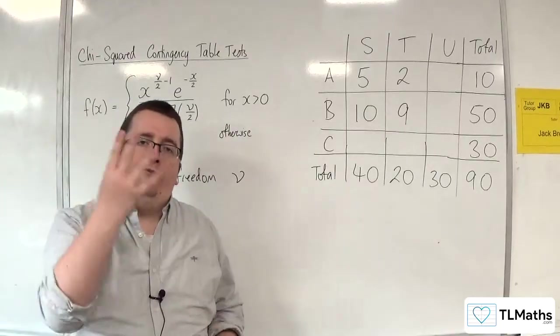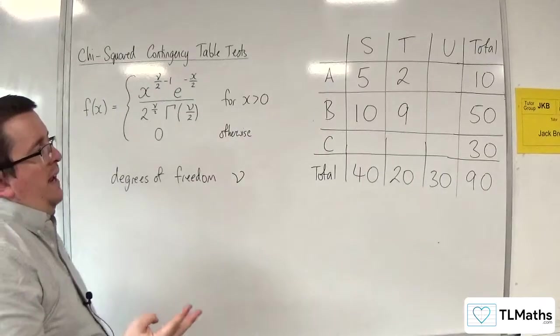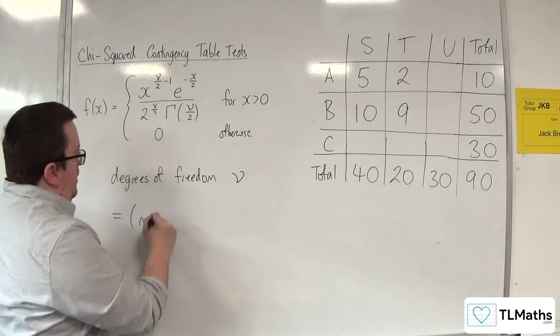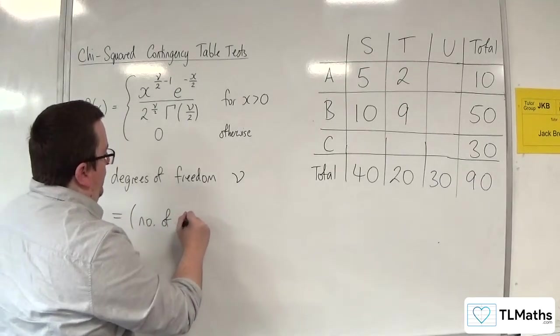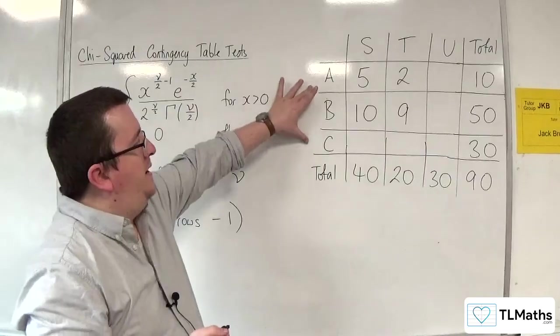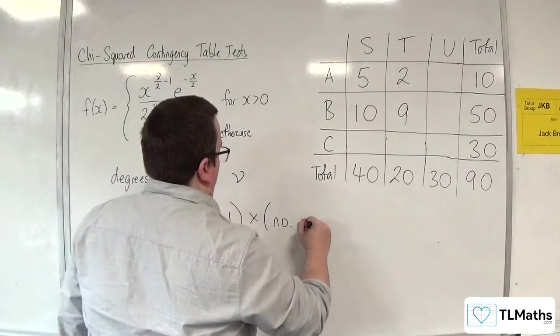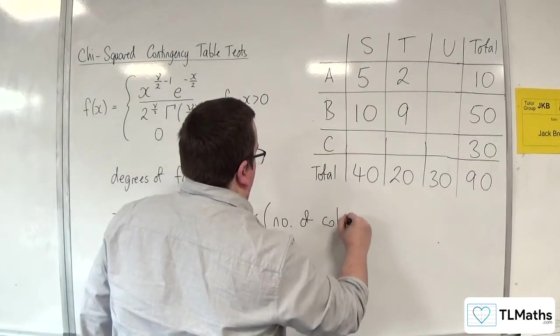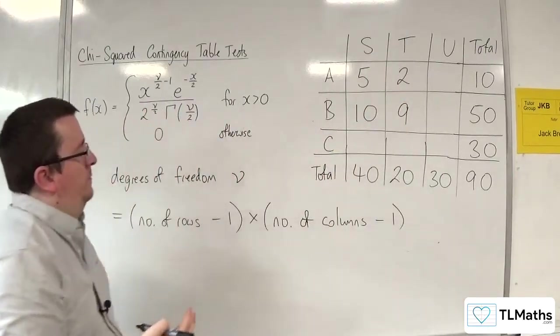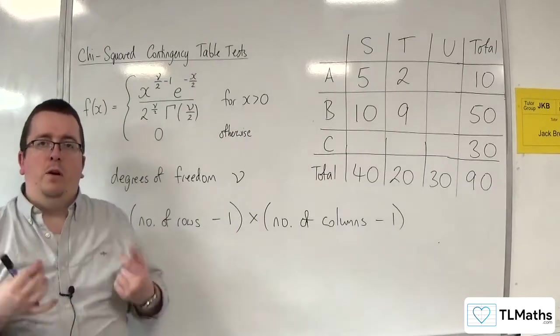So, there were 4 degrees of freedom. A quick way of being able to calculate this, the degrees of freedom, is to do the number of rows, take away 1, which in our case was 3, take away 1, so 2, times by the number of columns, take away 1, which was 3, take away 1, so 2.